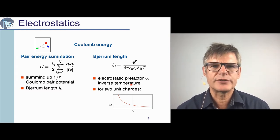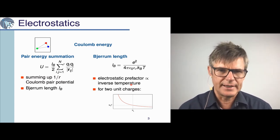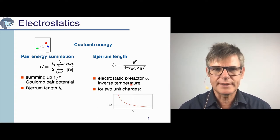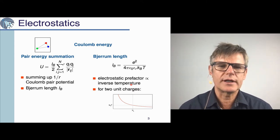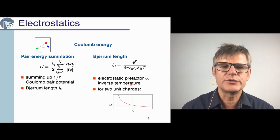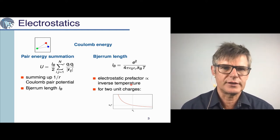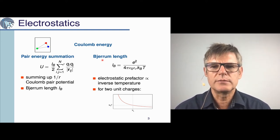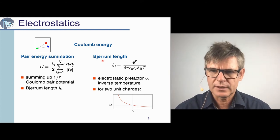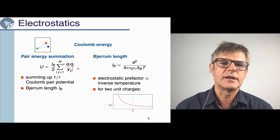What is so special about electrostatics? If you would like to compute the Coulomb energy in any kind of simulation, you can think of doing a pair energy summation. But it is a very long-range interaction — it's costly because we can't use any cutoff schemes and therefore we always have an N-squared kind of cost. A standard length scale which appears in calculation of Coulomb energies is the so-called Bjerrum length, defined via the electrostatic pre-factor which appears in the pair energy summation.